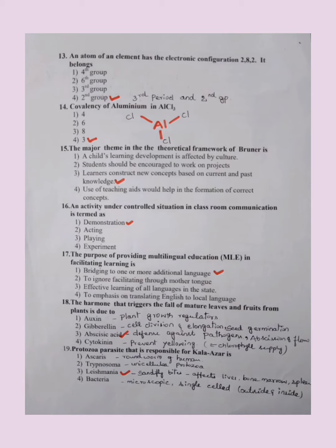Next question: covalency of aluminum in AlCl3. So here we can write this Al atom here and Cl3 like this. The valence is 1, 2, 3, so the answer is 3.